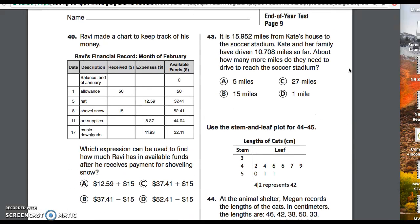Number 43. It is 15 and 952 thousandths miles from Kate's house to the soccer stadium. Kate and her family have driven 10 and 708 thousandths miles so far. About how many more miles do they need to drive to reach the soccer stadium?